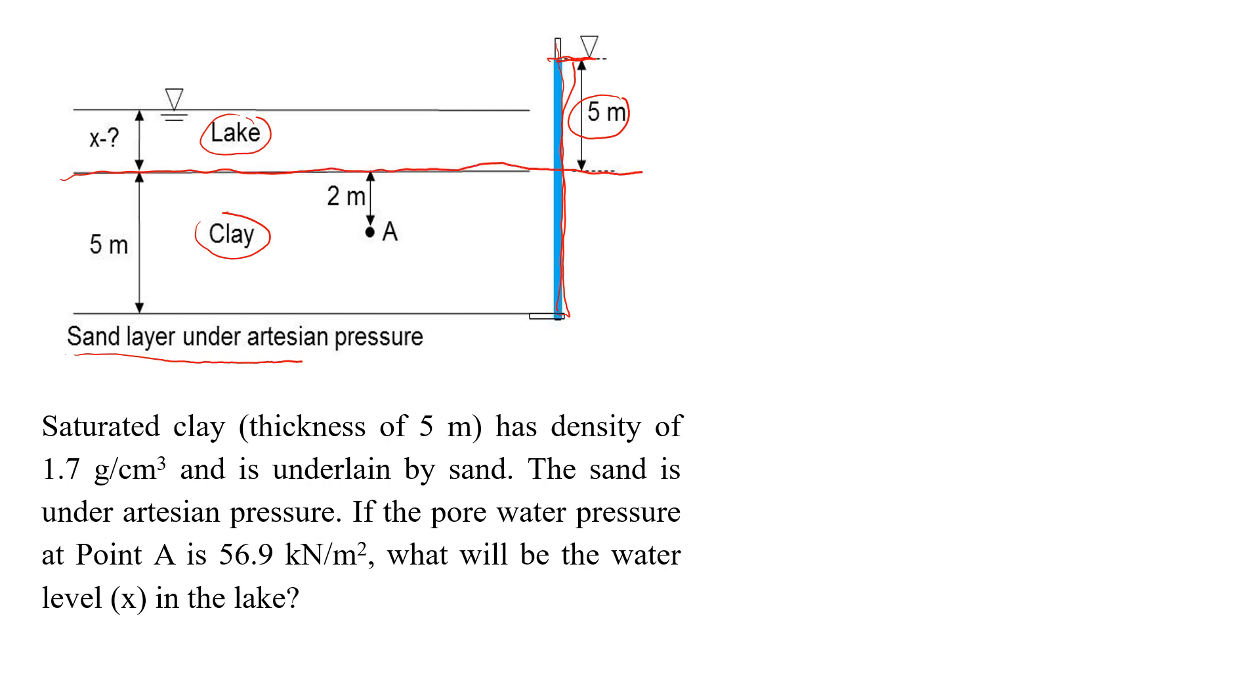What else we know is that clay has density of 1.7 grams per cubic centimeter. And then there is point A here, which is 2 meters below the ground surface. And when we measure the water pressure at point A, it will be equal to 56.9 kPa. So the question is, what is going to be the level in the lake? What is x?